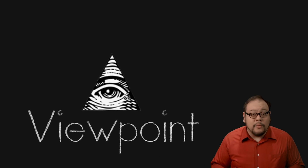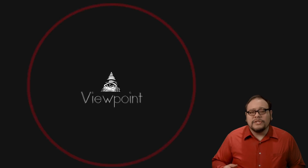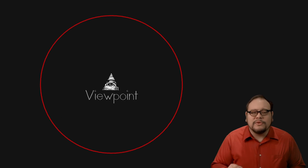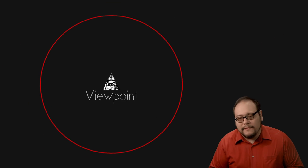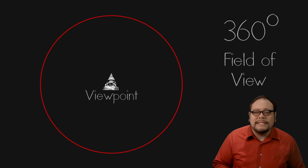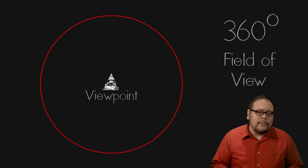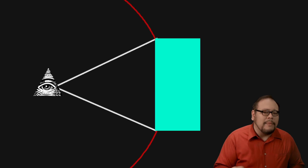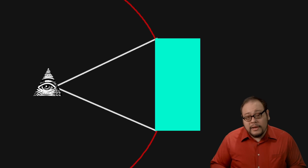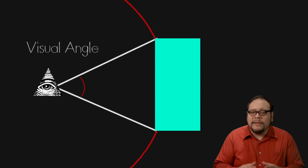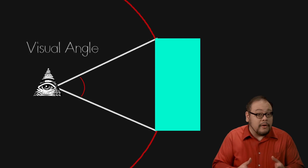To understand it we need to turn to some basic geometry. Let's imagine a viewpoint and work in two dimensions. We can draw a circle around our viewpoint which represents the entire field of view — all 360 degrees. Now let's say we have a box. How big will this box appear from the viewpoint? To define its size, let's draw tangent lines from each side of the box to the viewpoint.